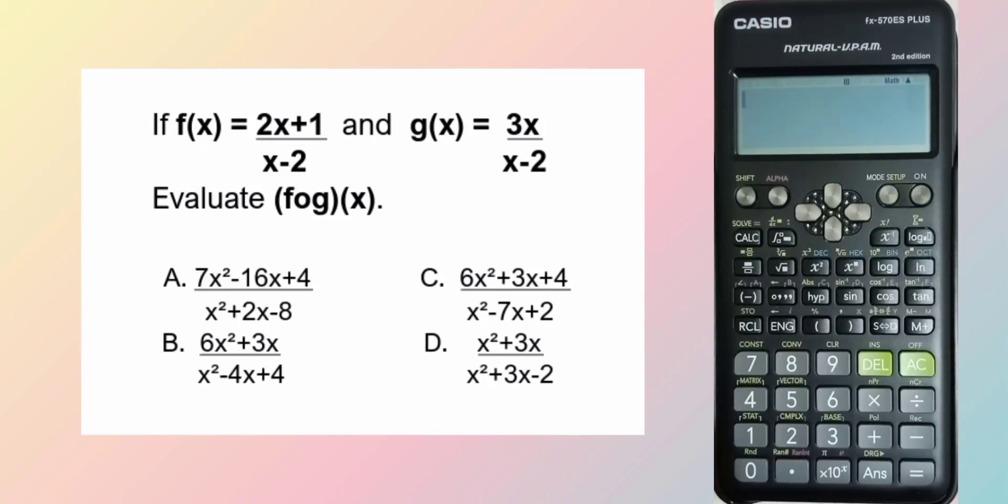If f of x is equal to 2x plus 1 over x minus 2, and g of x is equal to 3x over x minus 2, evaluate f composed of g of x.